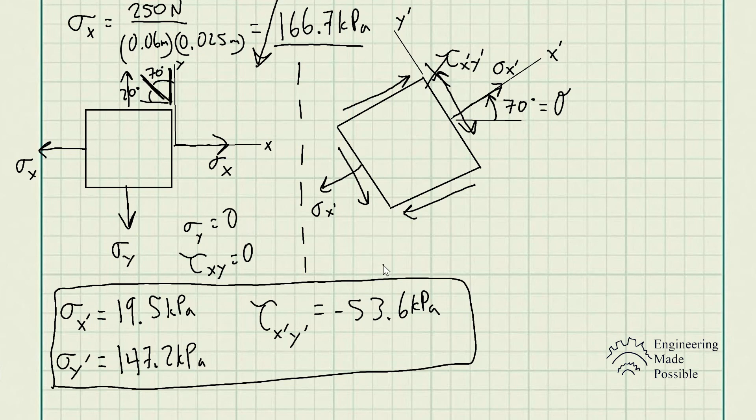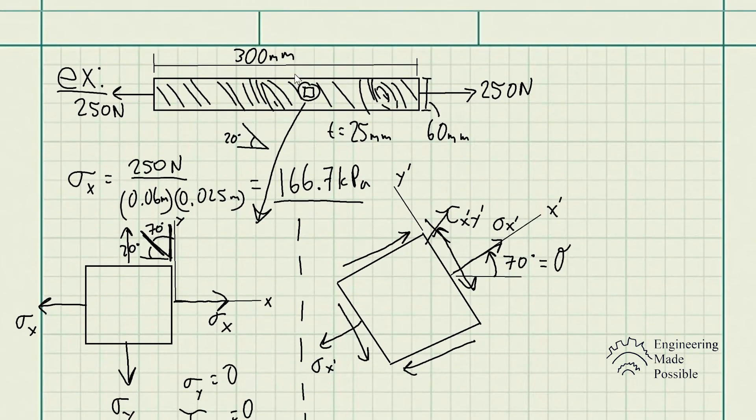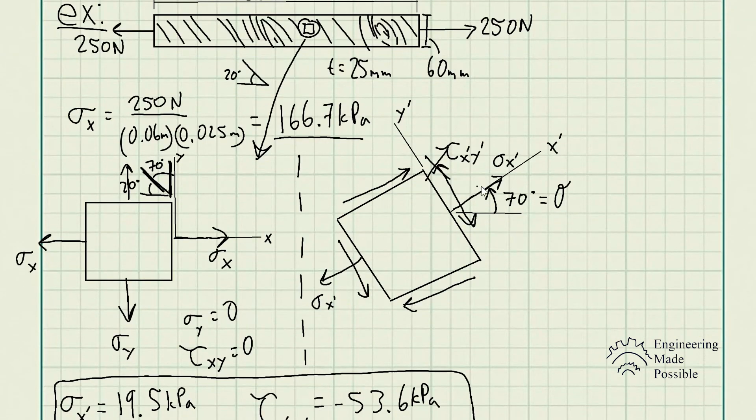The more you practice, the easier it gets. Let's go back and look at this object. If for whatever reason this was experiencing bending, then you would choose the element where you would have the maximum moment, calculate the bending stresses and so forth, and then see at what angle you would have the maximum normal and shear stresses to determine if it will fail at that particular area.